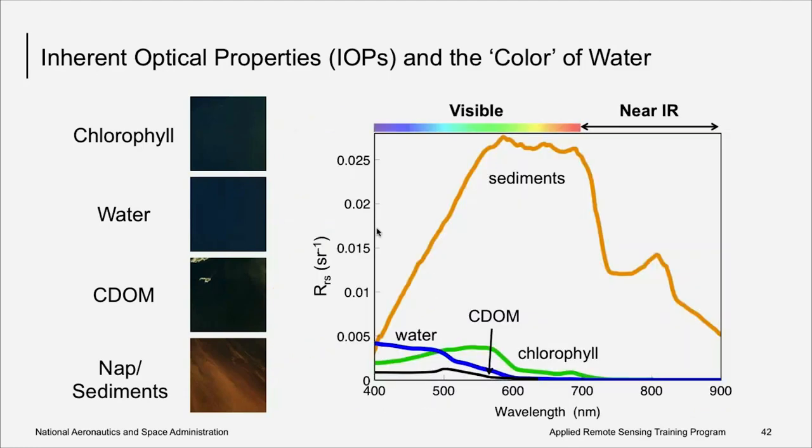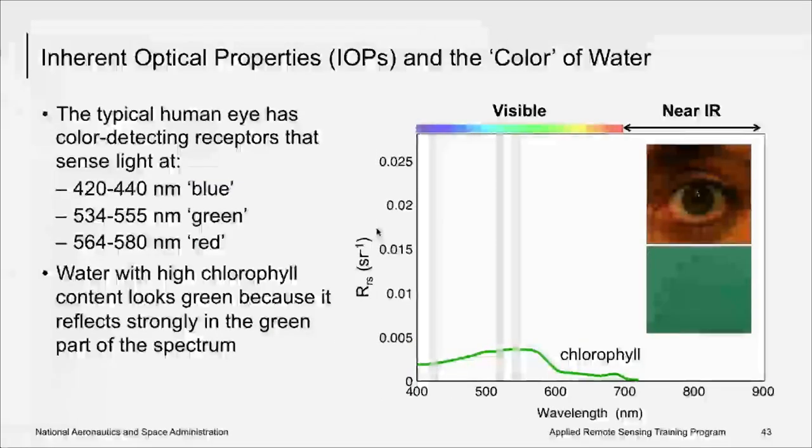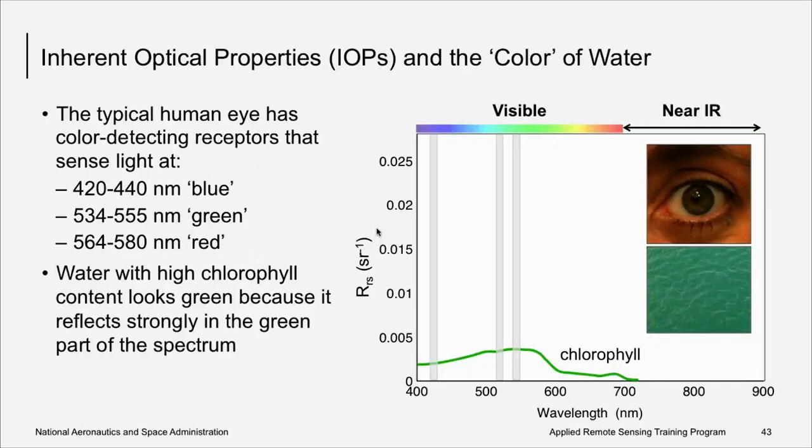So what would the reflectance spectra or remote sensing reflectance spectra look like for these different water types? In the figure on the right, you see wavelengths across the x-axis and remote sensing reflectance on the y. Note how the remote sensing reflectance spectrum is very low for CDOM, but has a higher magnitude for sediments. This intuitively makes sense because the sediment image looks light brown and brighter to our eye. The water appears blue. Chlorophyll reflects strongly in the green. So to our eye, chlorophyll looks green. Look at the figure to the right. The gray vertical bars represent the wavelength ranges where typical human eye detects light. Humans have color detecting receptors that sense light in about three ranges corresponding to blue, green, and red.